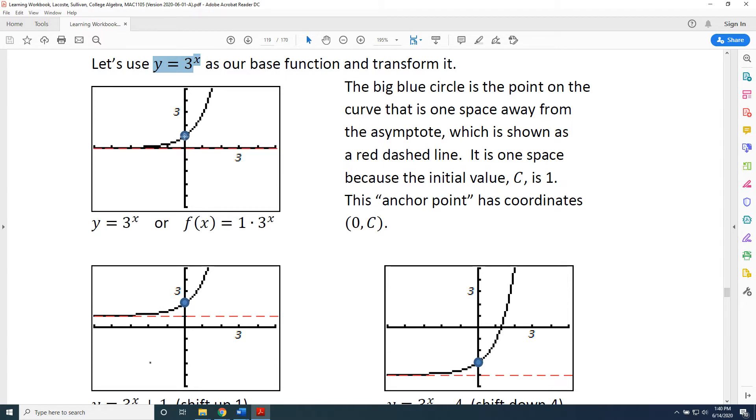This blue point acts as an anchor point that allows us to measure how we transform our graph. The anchor point has coordinates (0, C). Again, C, shown here, is 1. Now we're going to transform our graph. Let's start by taking the graph shown here and transforming it to the graph immediately below it.